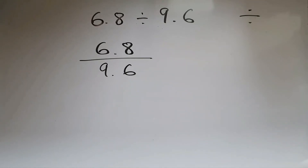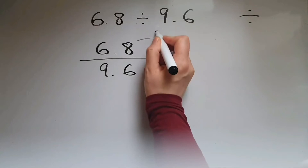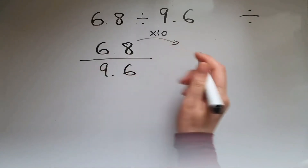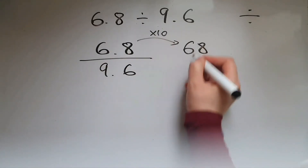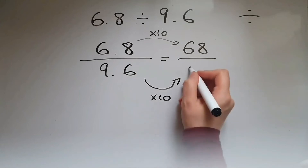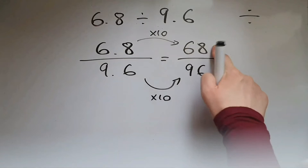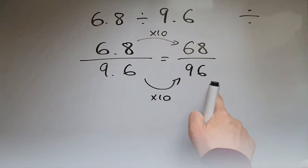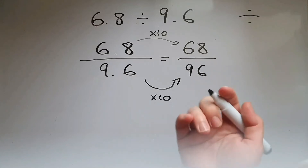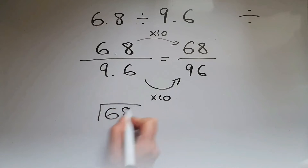The aim is to get it out of decimal form so we can work with whole numbers. 6.8 times 10 gives me 68, and 9.6 times 10 is 96, so this is the same as 68 divided by 96.